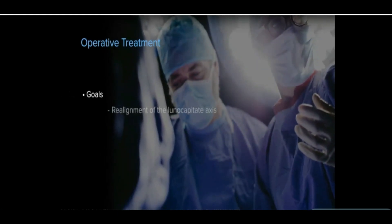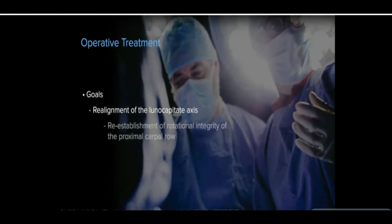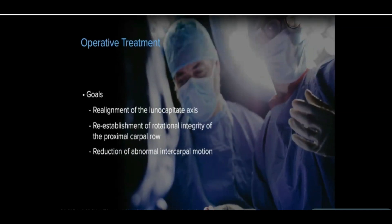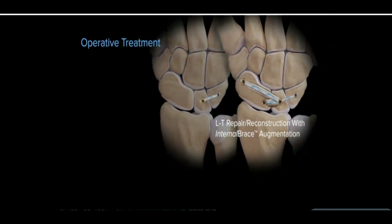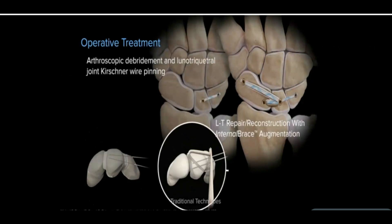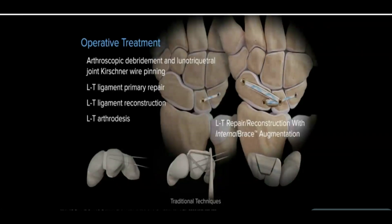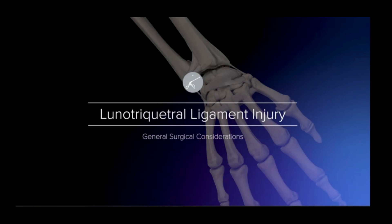For patients with acute or chronic dissociation or chronic tears that have failed conservative management, operative treatment is necessary to realign the lunocapitate axis, reestablish the rotational integrity of the proximal carpal row, and reduce the abnormal intercarpal motion. Surgical treatment options for lunotriquetral ligament tears depend on the stage or type of injury and range from arthroscopic debridement coupled with Kirschner wire pinning of the LT joint, LT ligament primary repair, LT ligament reconstruction, and LT arthrodesis.